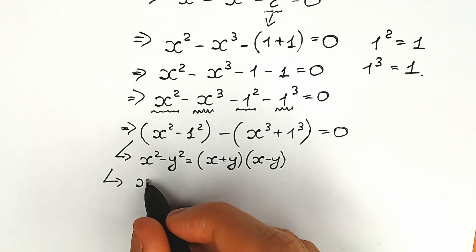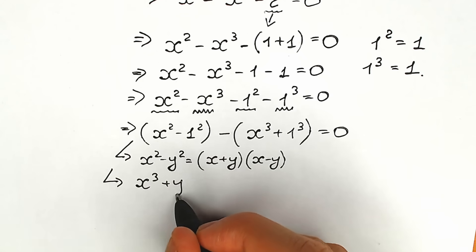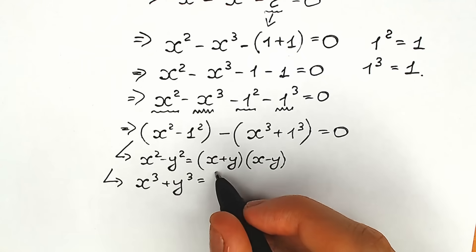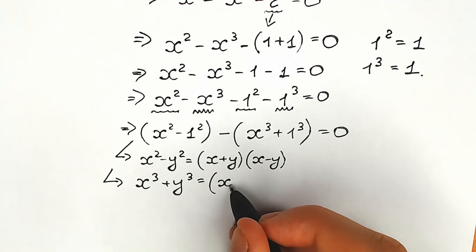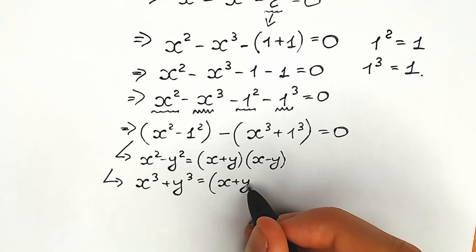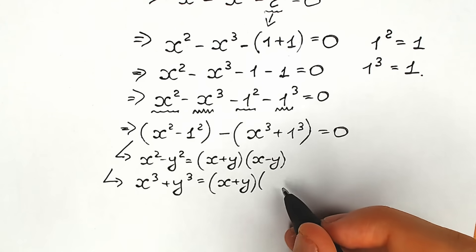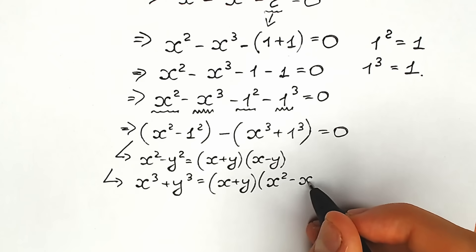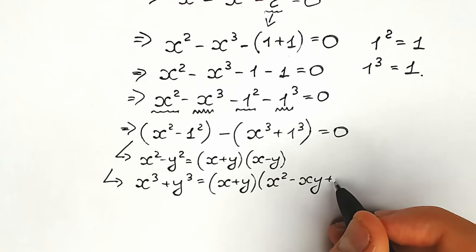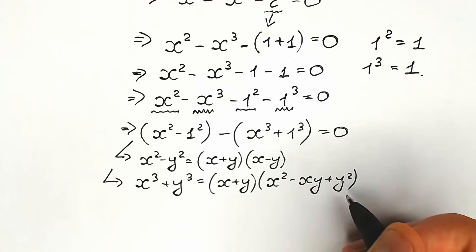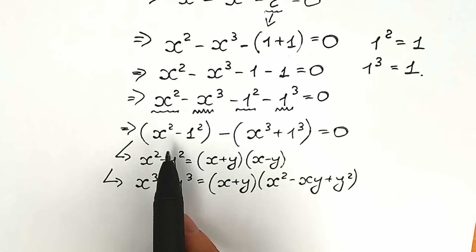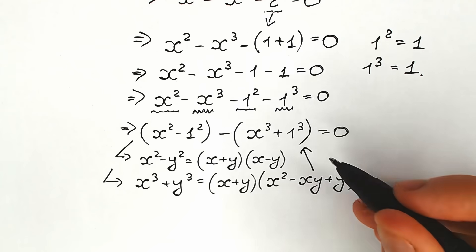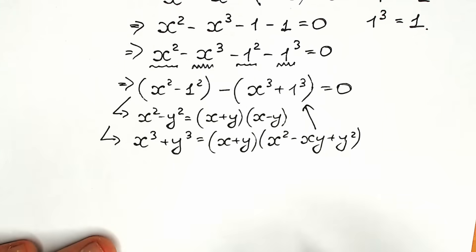For the sum of two cubes, we recall the formula: x cubed plus y cubed equals (x plus y)(x squared minus xy plus y squared). So let's apply the difference of squares to the first parenthesis and the sum of two cubes to the second parenthesis.